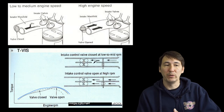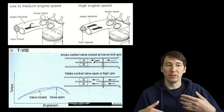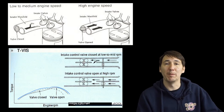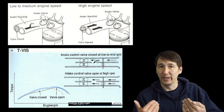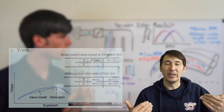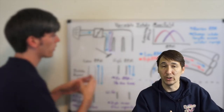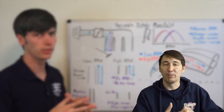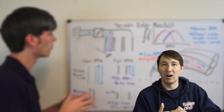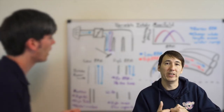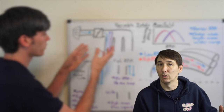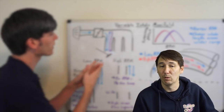The reason for doing this is because you want to increase the airspeed at lower RPM. If you increase the airspeed at lower RPM, you get more mixture in the combustion chamber. If you want to know in great detail how this functions and why you should do this, check out this Engineering Explained video telling you all about how it works.